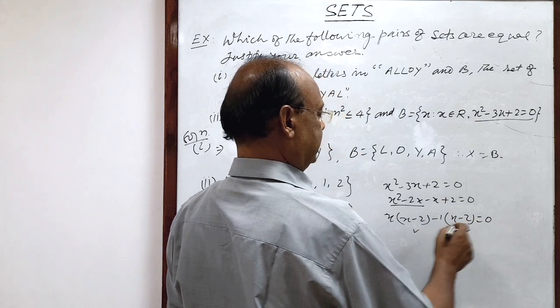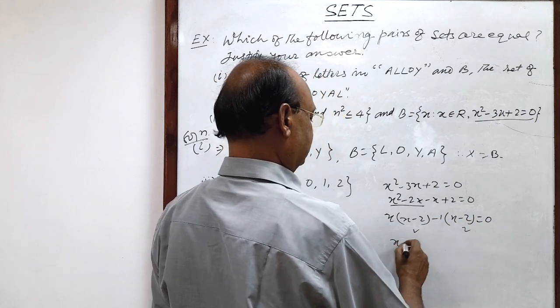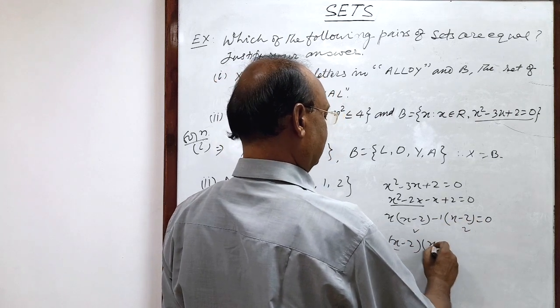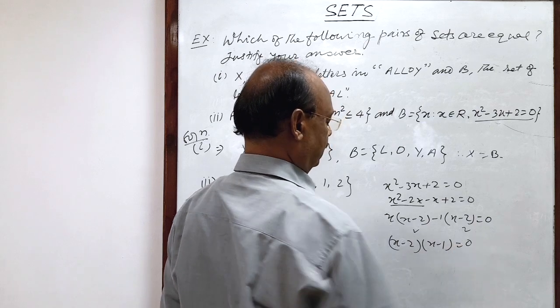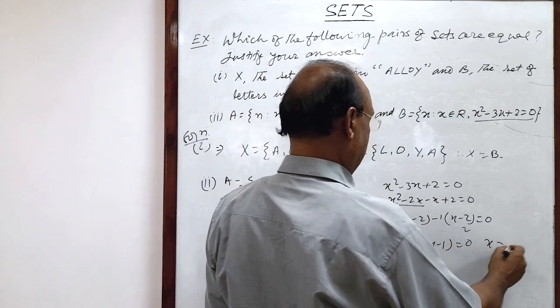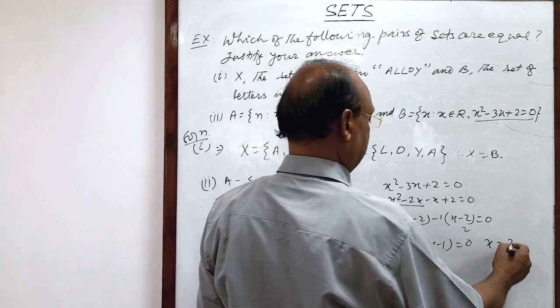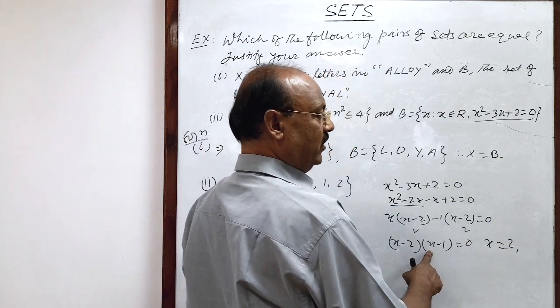These two factors are the same, common, so x minus 2 into x minus 1 is equal to 0. Here values of x will be: when x minus 2 is 0, x is equal to 2, and when x minus 1 is equal to 0, x is equal to 1.